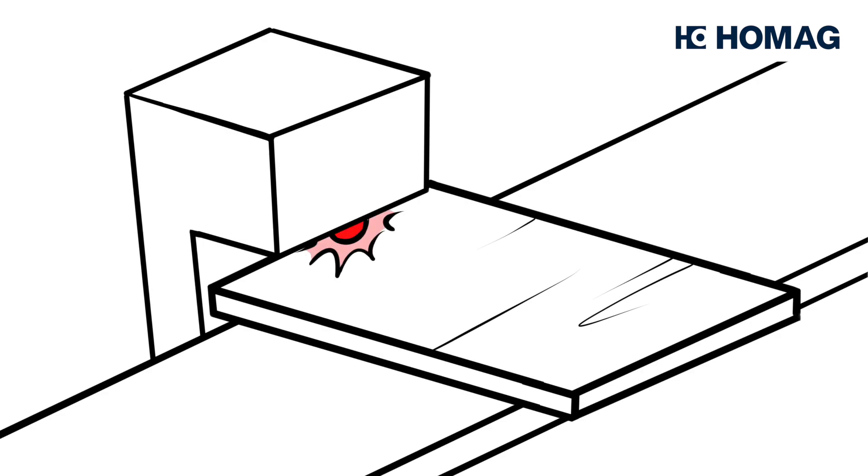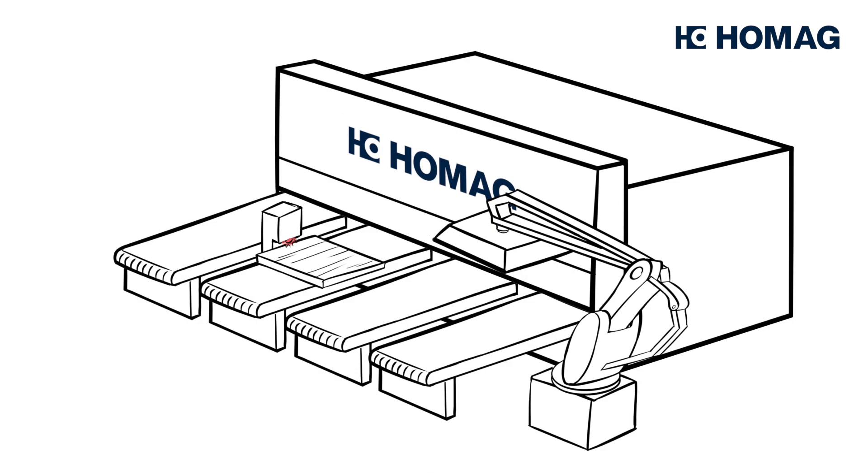The MSQ now measures the edge breakouts on the top and bottom sides, and on the saw blade exit and recognizes even the smallest breakouts. If the part is within the individually set tolerance, production continues as planned.